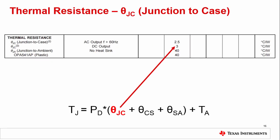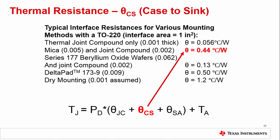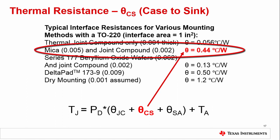The thermal resistance from junction to case, or theta JC, is related to the mechanical characteristics of the integrated circuit. In general, this parameter is given in the amplifier's data sheet. For example, the OPA541 has theta JC equal to 3 degrees C per watt. Different package types will have different values for theta JC. The thermal resistance from case to sink, or theta CS, is related to the mechanical interface between the integrated circuit and the heat sink. Often, an electrically insulative but thermally conductive washer is used with a thermally conductive grease. The table above gives theta CS for several different thermal interface materials. In our examples, we will assume that a MICA washer is used with joint compound, for theta CS equal to 0.44 degrees C per watt.